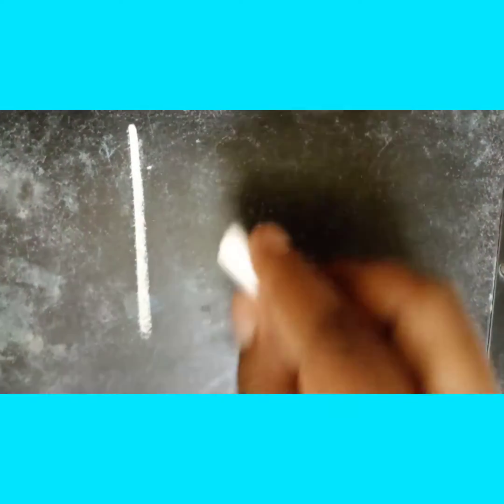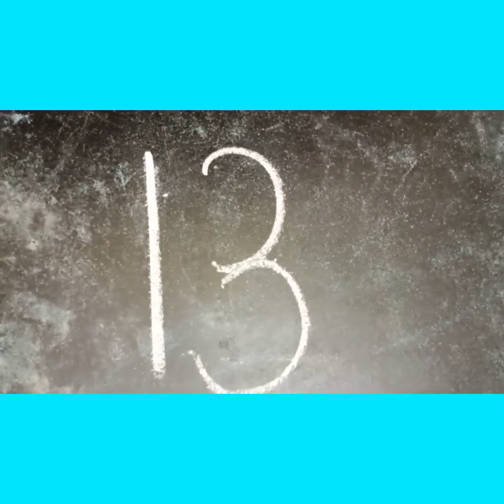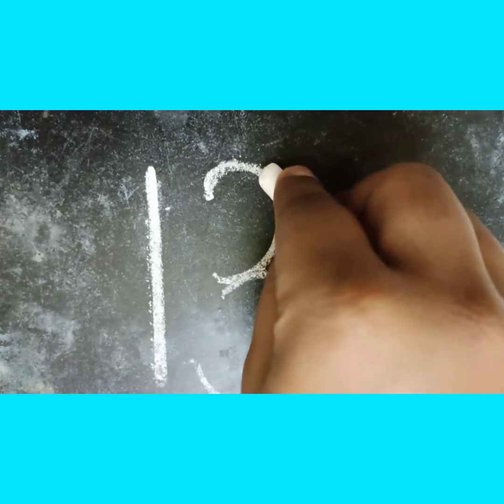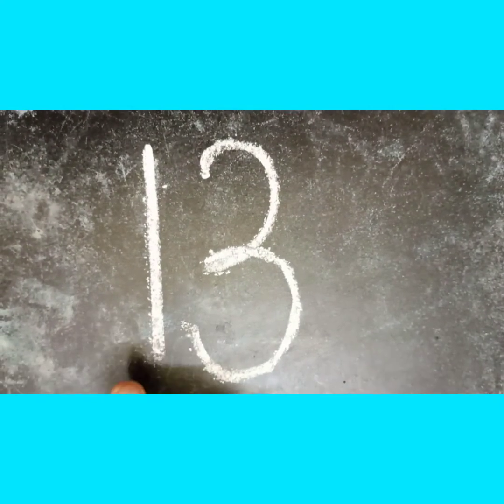Now let's learn how to write. Draw number 1, top to bottom. Draw number 3 — a curve, then again a curve. That makes the number 3. 1 and 3 is 13.